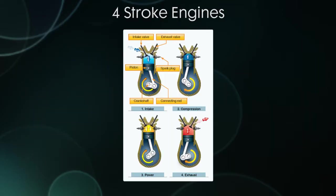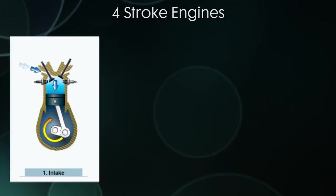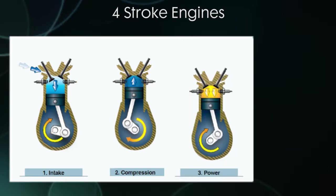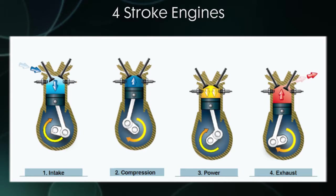Airplane engines are mostly four-stroke, meaning power is generated as the piston moves up and down a total of four times. The first stroke is the intake stroke: as the piston moves down, it creates suction and pulls the fuel and air mixture inside through the open intake valve. The second is the compression stroke: the intake valve closes, and as the piston moves up, it squeezes the mixture. The power stroke begins when the spark plugs ignite the mixture, and the explosion sends the piston down, spinning the crankshaft. Finally, the exhaust stroke is when the exhaust valve opens, the piston comes back, and all the burned gases leave the cylinder.